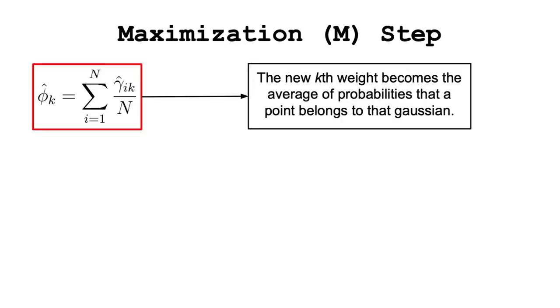Then, in the maximization step, we recompute our parameter estimates of the Gaussian mixture model. Firstly, the new weight of each k-th Gaussian is computed by averaging the probabilities of all points belonging to the cluster.